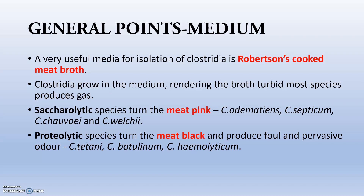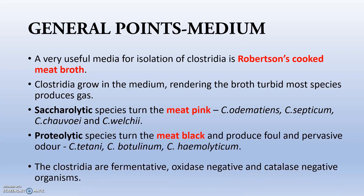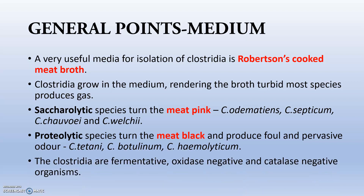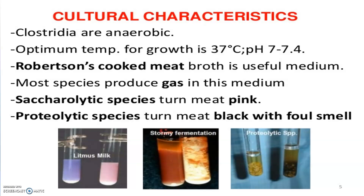You can remember proteolytic species as tetani, botulinum, and haemolyticum. Clostridia are fermentative and are oxidase-negative and catalase-negative organisms. Cultural characteristics: Clostridia are anaerobic with an optimum temperature of 37°C. Robertson's cooked meat is the best medium — saccharolytic species turn it pink, proteolytic species turn it black with foul smell. Most species produce gas.